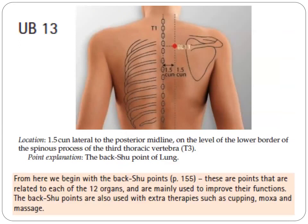Next, UV13, which is located 1.5 cun lateral to the posterior midline, on the level of the lower border of the spinous process of the third thoracic vertebra, T3. Point explanation: this is the back shu point of the lungs. This is where we begin with back shu points — these are points related to each of the 12 organs and are mainly used to improve their functions. The back shu points are used with extra therapies such as cupping, moxa, and massage.